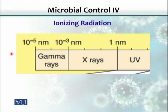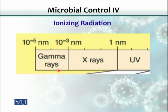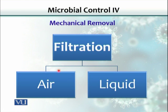Ionizing radiation is more powerful — it has more energy, and we can achieve complete sterilization. Objects like plastic syringes and medical supplies used in daily life are gamma irradiated. Even liquids and injections could be gamma irradiated. Radiation, as mentioned, changes the DNA. Another mechanical method for removal of organisms is filtration.